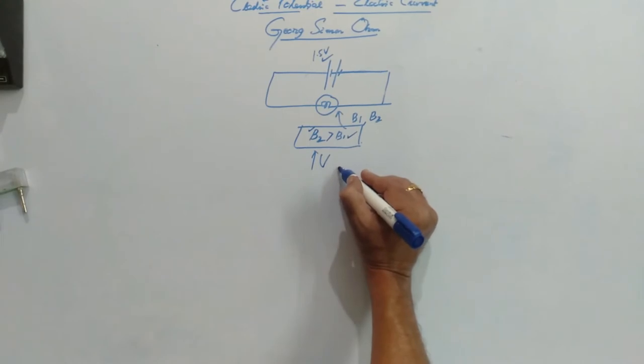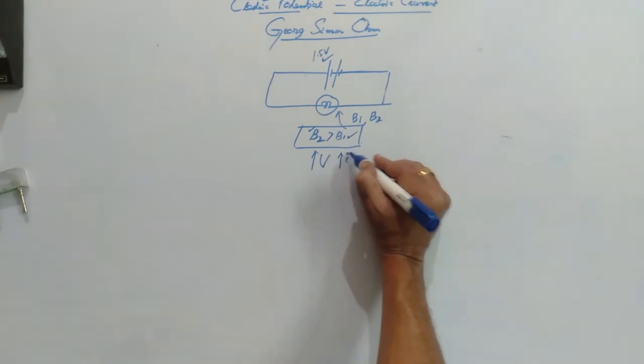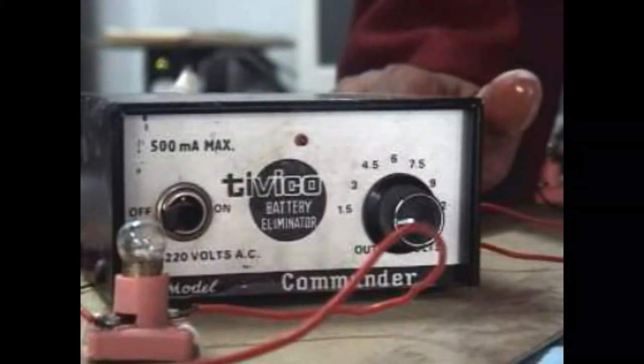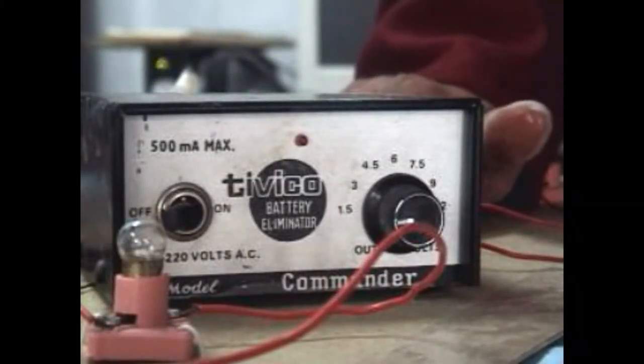The current is causing the brightness. Therefore, I is also increased. Let us go through the activity by increasing the voltage. When we increase the potential, the current is also increased.